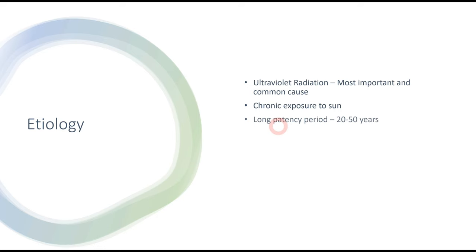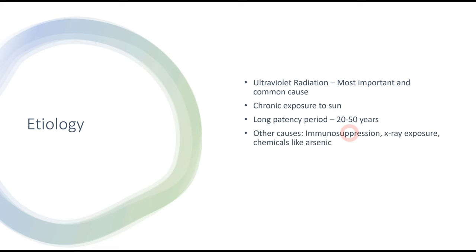The latency period of basal cell carcinoma is around 20 to 50 years, so it grows slowly and takes time to reach a size that can be clinically identified. There are some other causes as well — for example, immunosuppression, X-ray exposure, and exposure to chemicals such as arsenic. About 90% of cases arise from ultraviolet radiation, while 5 to 10% may arise from other causes.